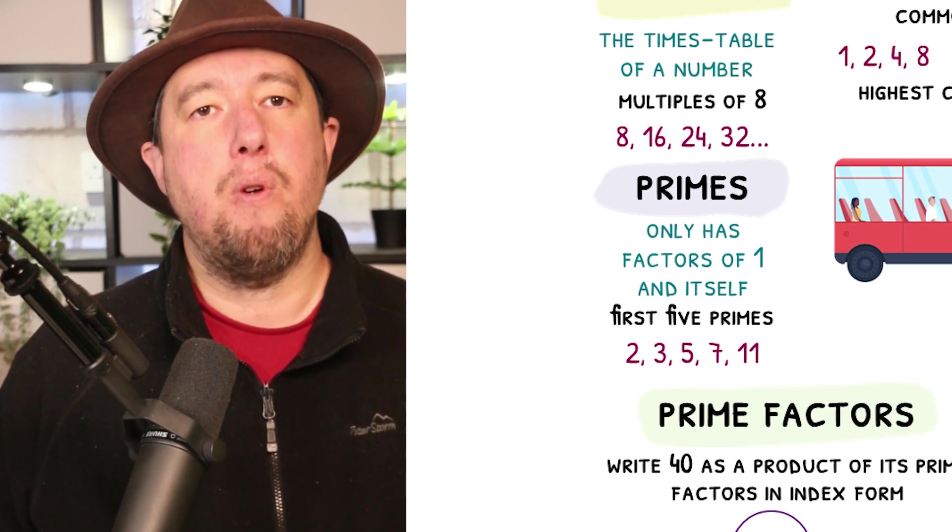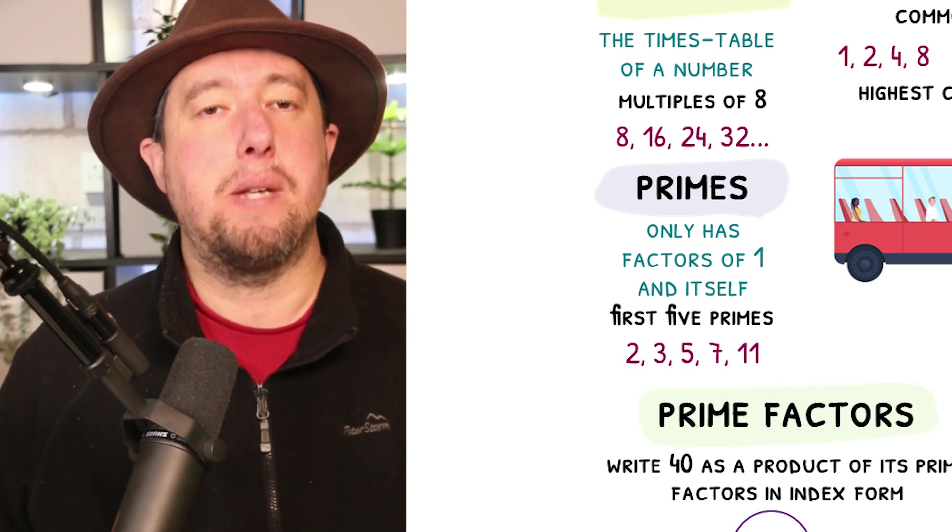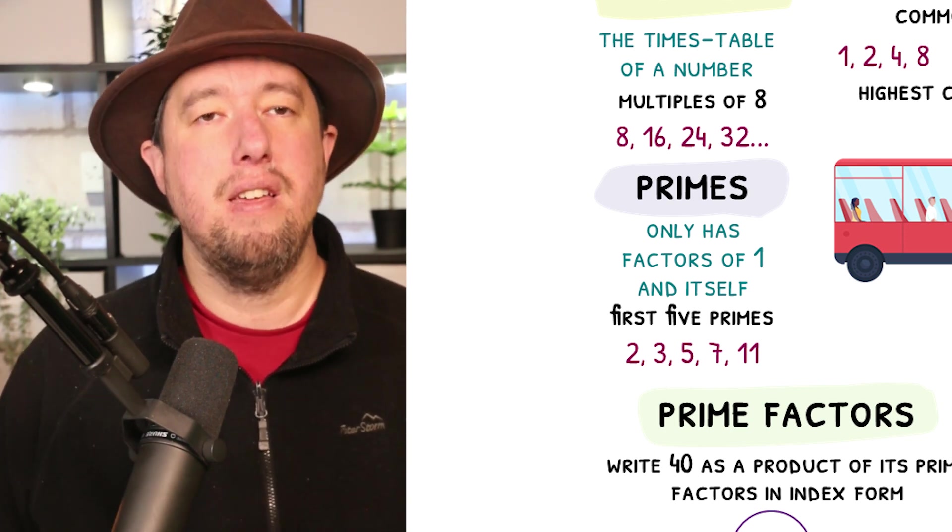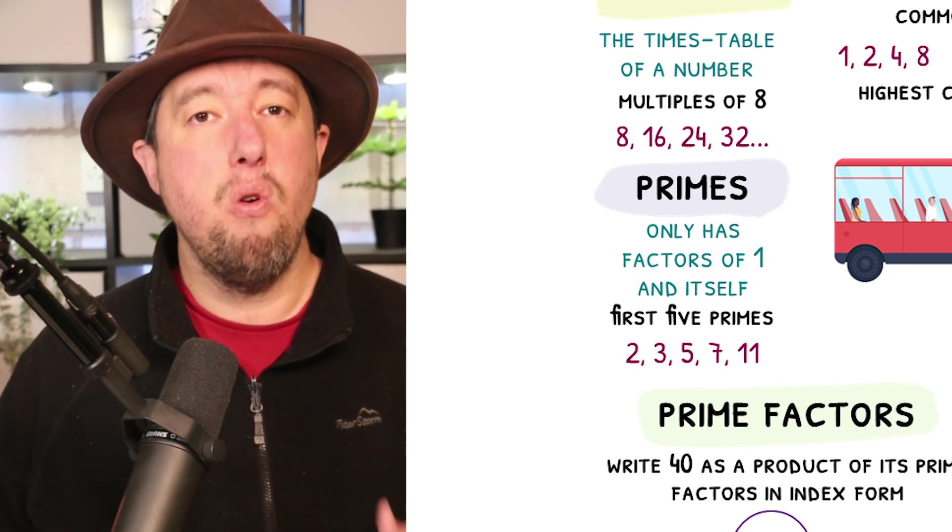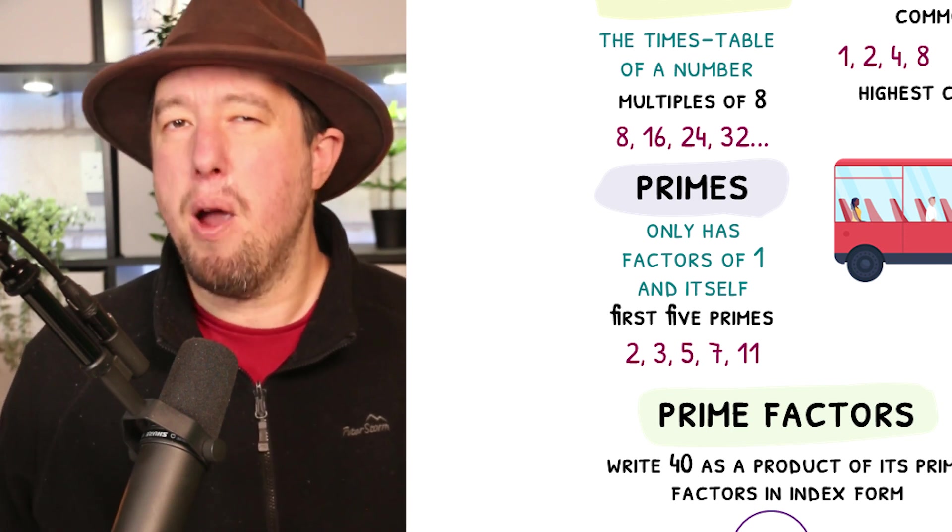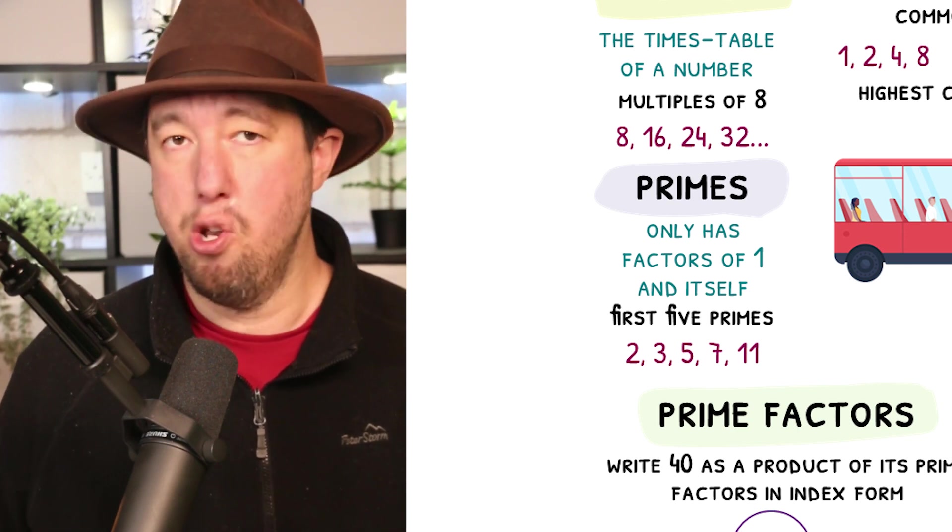When looking at factors, we found out that every number has a factor of 1 and itself. What makes prime numbers special is that these are the only factors they have. 7 is a prime number because it is only in the 1 times table and the 7 times table. 9 looks like it might be a prime number, but you can find it in the 3 times table, so 9 is not a prime number.